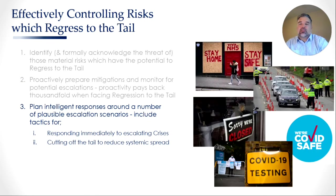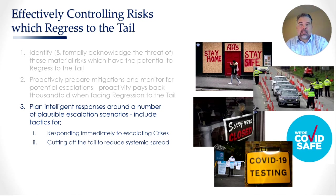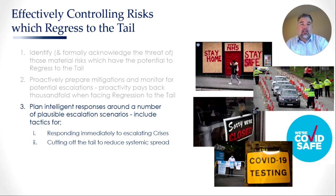Number three: plan intelligent responses around a number of plausible escalation scenarios. Once we identify what our potential regression threats are, let's prepare for them. Let's have response plans for various types of permutations or escalation scenarios — in particular, plans for responding immediately when it escalates to crisis and for cutting off the tail to reduce the systemic spread. If we look at coronavirus and how we addressed it, all those shutdowns, lockdowns, COVID-safe behaviors, social isolation, and flattening of the curve — all of that was designed to cut off the tail and reduce the systemic spread of the pandemic.